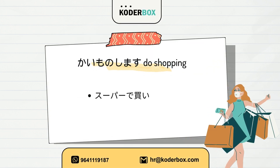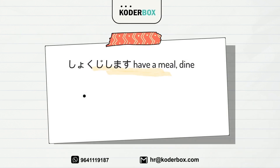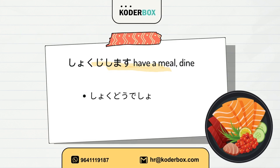Sixth, kaimono shimasu — do shopping. Suupaa de kaimono o shimasu. I shop at the supermarket. Seventh, shokuji shimasu — have a meal, dine. Shokudou de shokuji o shimasu. I eat at the cafeteria.